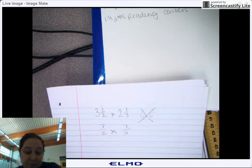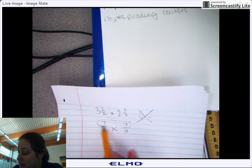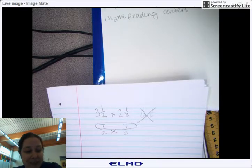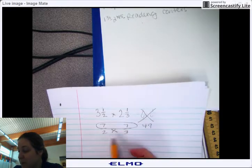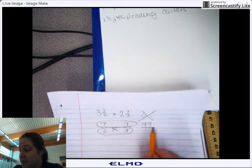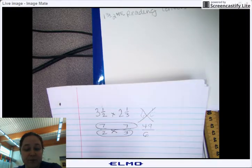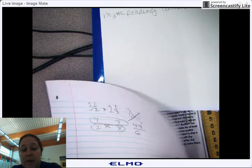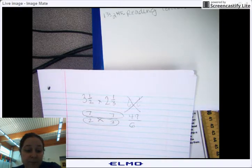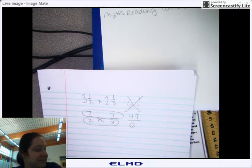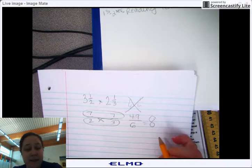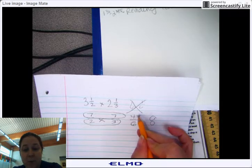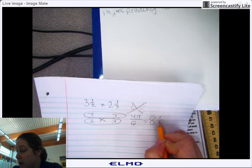And you're going to get 7 over 3. Now you can multiply them. So you're going to take 7 times 7 equals 49, 2 times 3 equals 6. Now you have to figure out how many times 6 can go into 49.